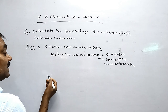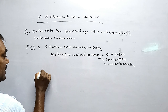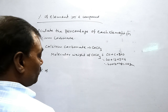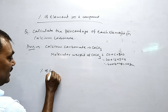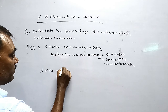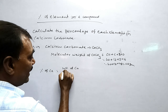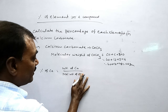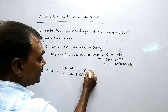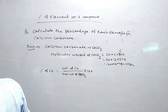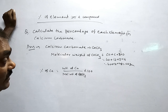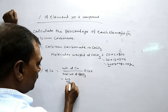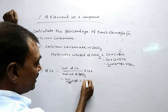How do we calculate the percentage of calcium? The percentage of calcium equals the weight of calcium by the molecular weight of calcium carbonate, into 100. The weight of calcium is 40, so 40 by 100 into 100 equals 40 percent.